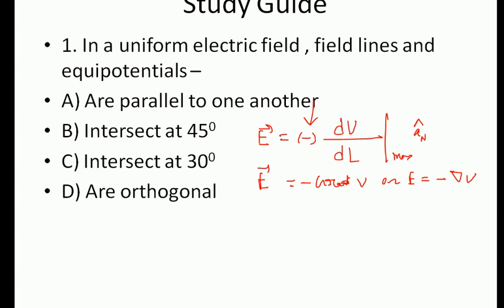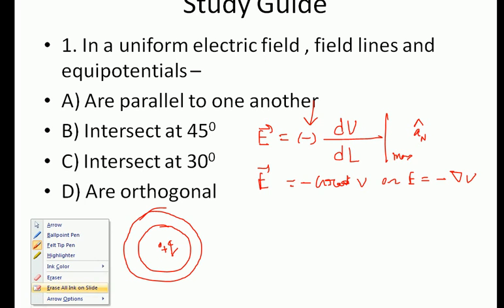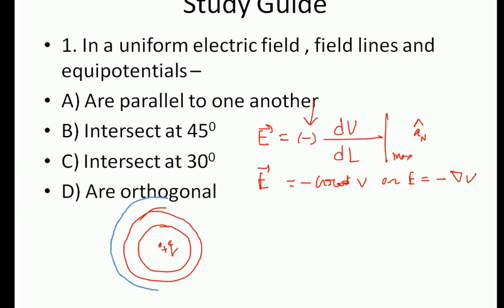What does all this signify? Suppose there is a positive charge here. The equipotential surface is the surface where the potentials are equal. All these curved surfaces are equipotential surfaces. Any point on this curved circle has the same potential; any point on this curved surface has the same potential; any point on this surface also has the same potential.